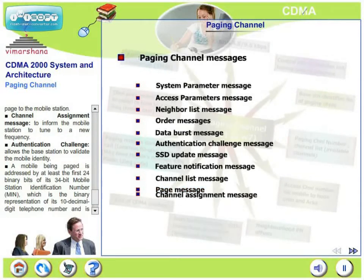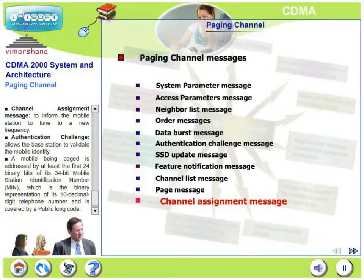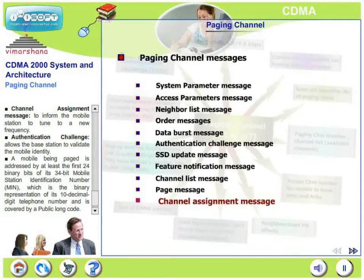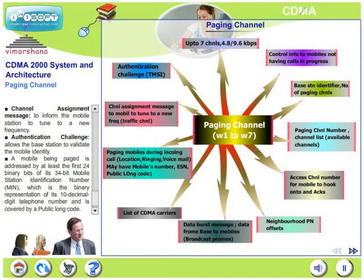The channel assignment message informs the mobile station to tune to a new frequency. Authentication challenge allows the base station to validate the mobile's identity. A mobile being paged is addressed by at least the first 24 binary bits of its 34-bit MIN, or mobile station identification number, which is a binary representation of its 10 decimal digit telephone number, and is covered by a public long code.